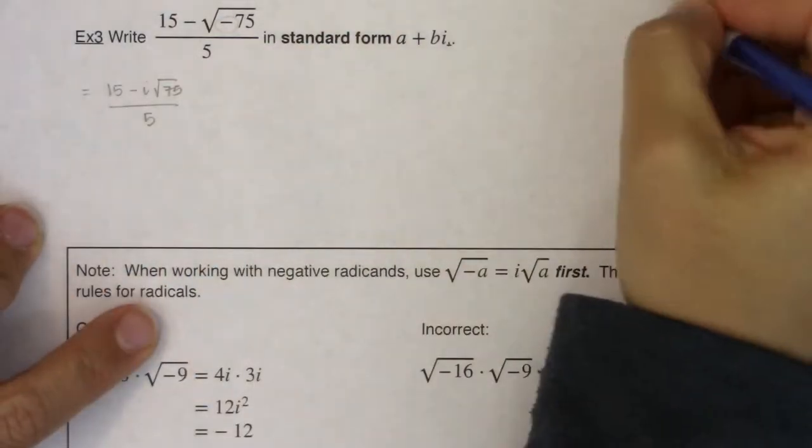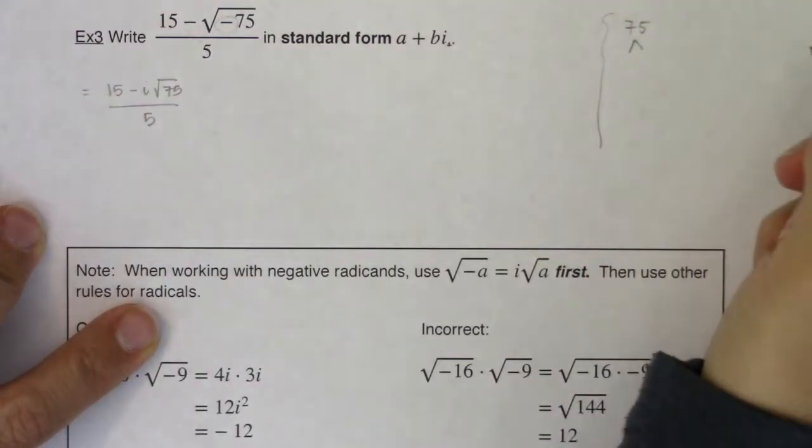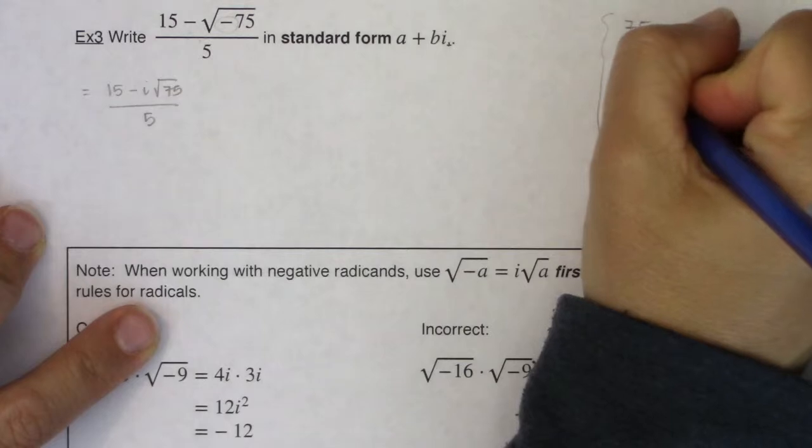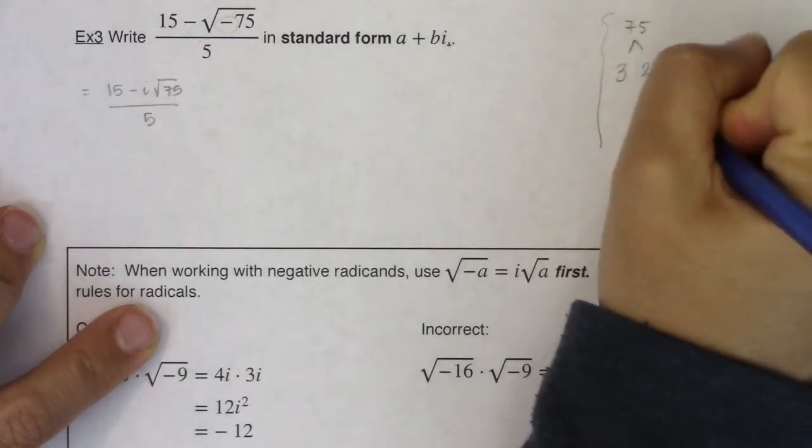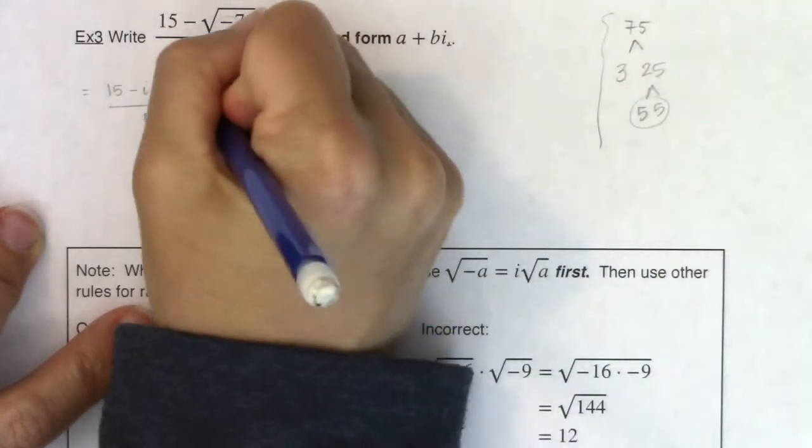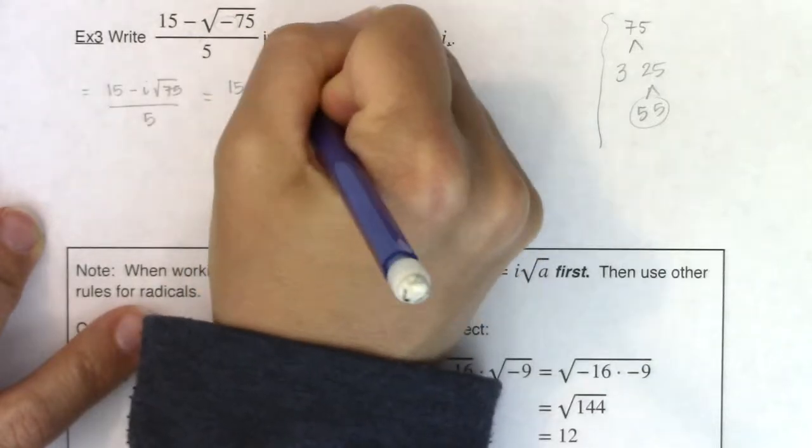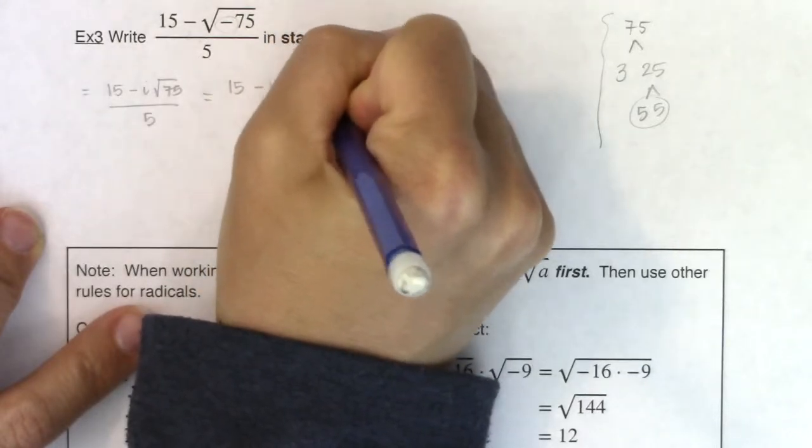Now for 75 let me do a factor tree or break it down by primes. I'll put it off to the side here. So for 75 I know that can be 3 times 25 and 25 is 5 and 5. So I see a pair of 5s and a 3. So this is going to be 15 minus i and it looks like I have 5 squared times 3.